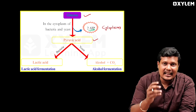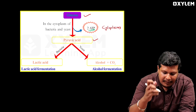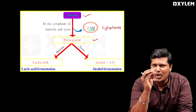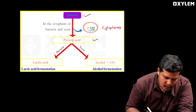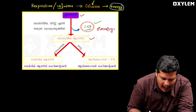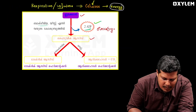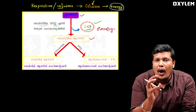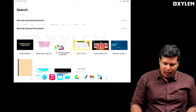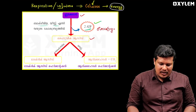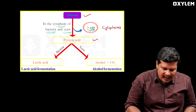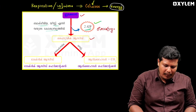We have a system for anaerobic respiration. In the name of Sushma Jeevika — bacteria, yeast — these are called Sushma Jeevika. This process occurs in the cytoplasm. The cytoplasm is where this process takes place.